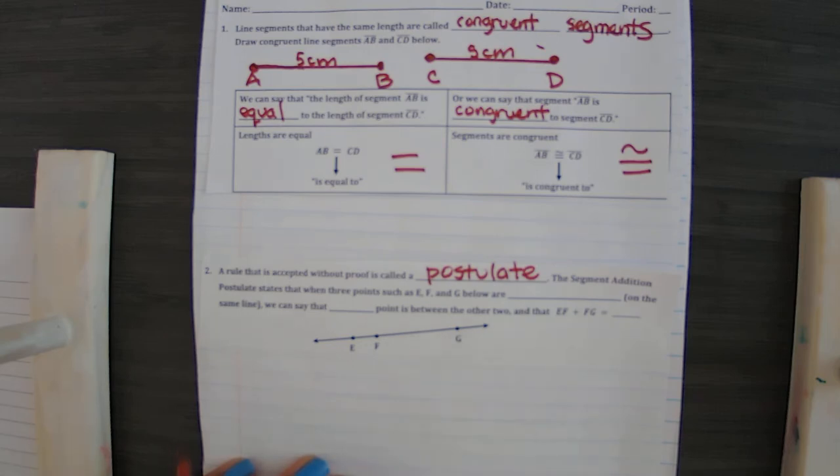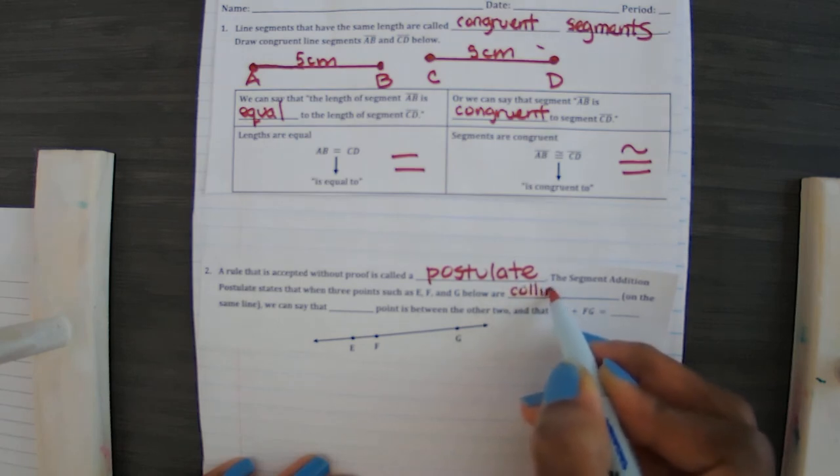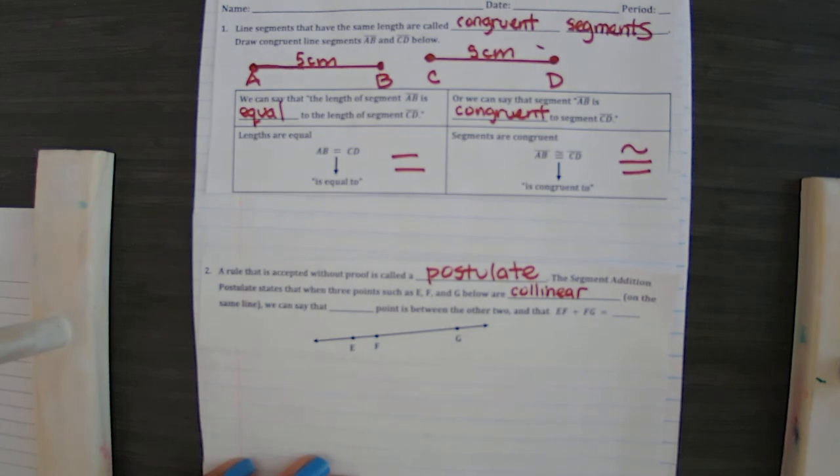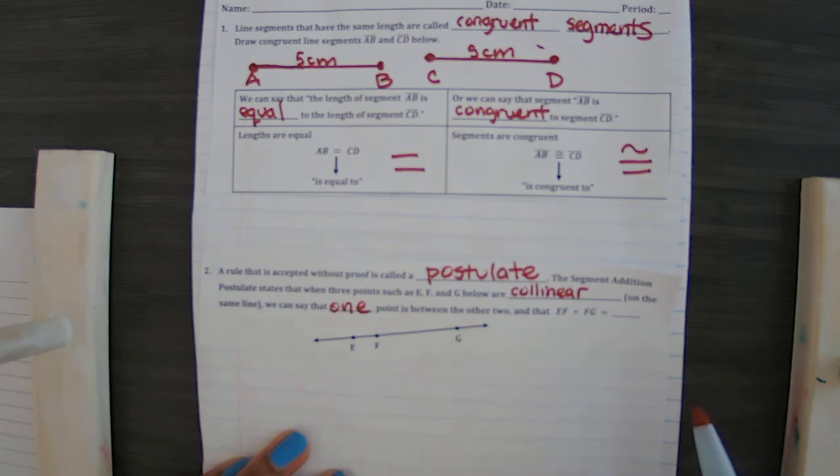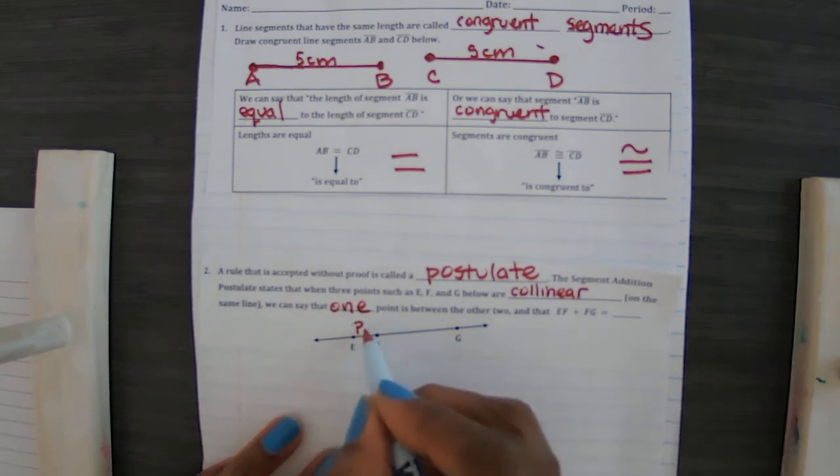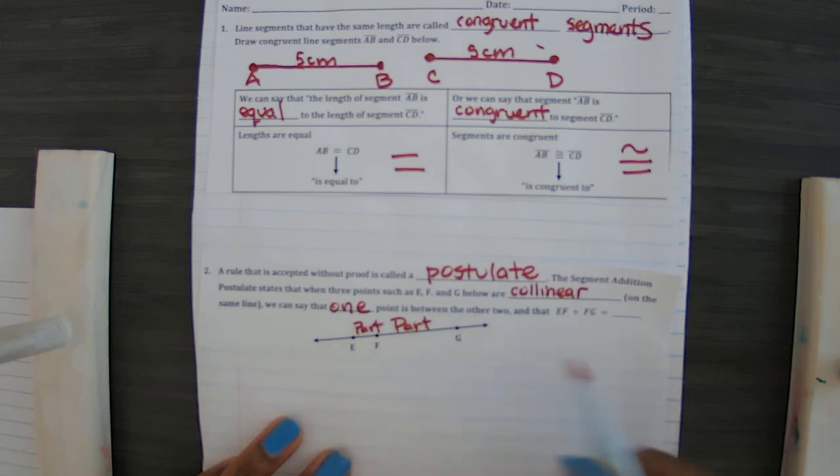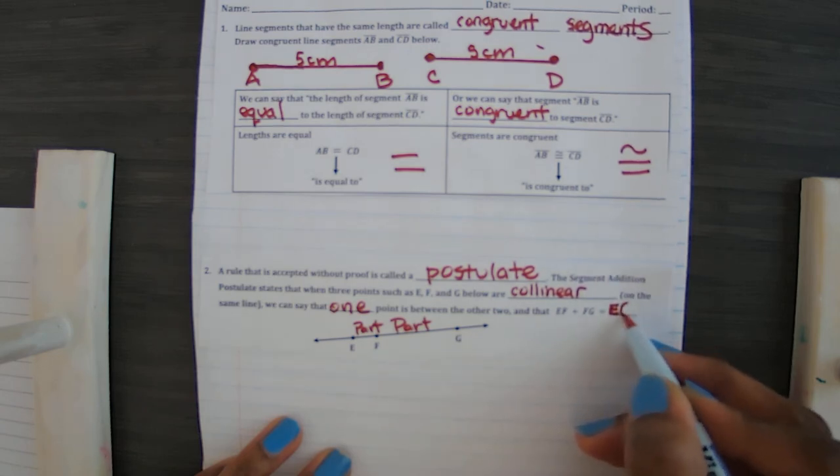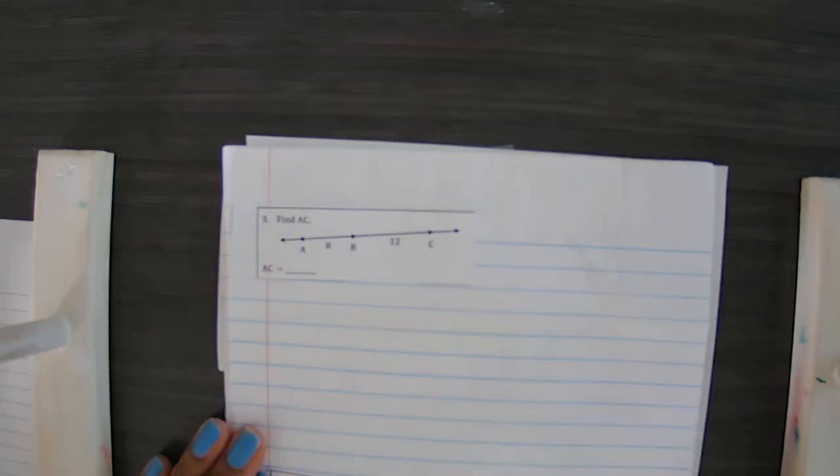are on the same line, you know that we call that collinear—they're on the same line. We say that one point is between the other two, and that EF, this been a part, and FG, this spin the other part, is equal to the whole, which would be EG. So the part plus part is equal to the whole.